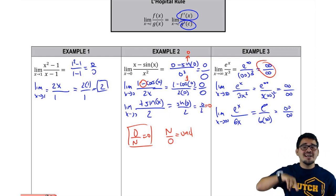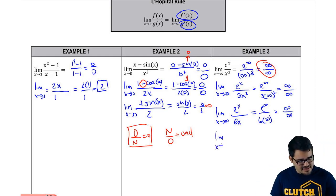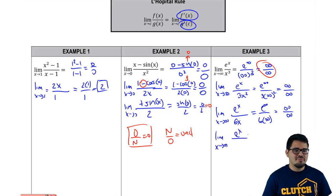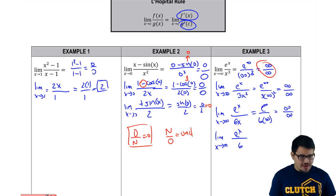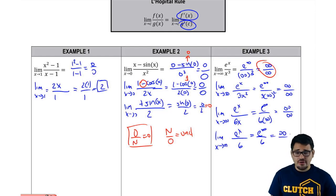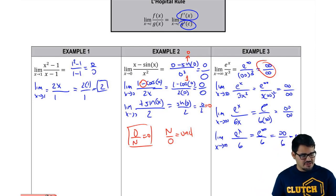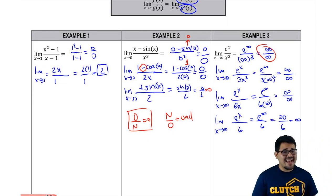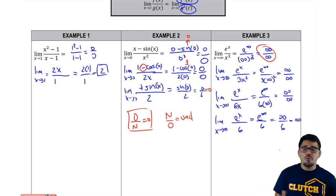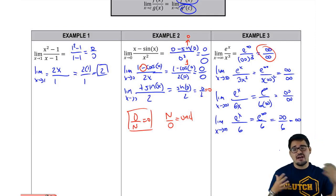We apply L'Hôpital's rule a third time. The top remains eˣ, and now the polynomial finally gives out — its derivative is just 6, a constant. So we have the limit of eˣ / 6 as x approaches infinity. e to the infinity is infinity, and 6 is just 6, so infinity divided by 6 is still infinity. Our final answer is infinity. The exponential function always grows faster than any polynomial — wherever the exponential is, that's where the limit goes.